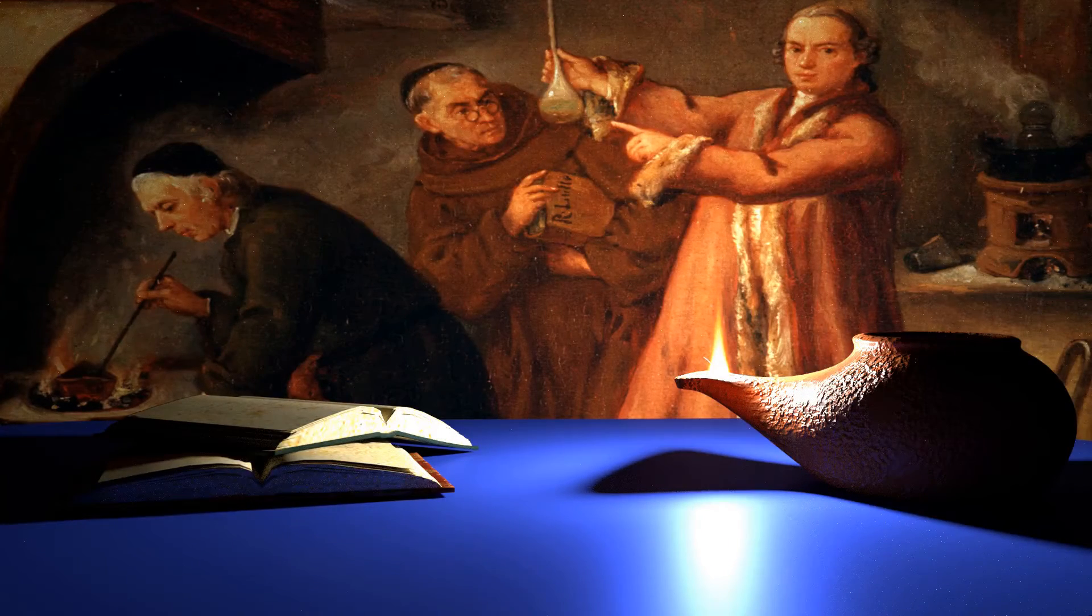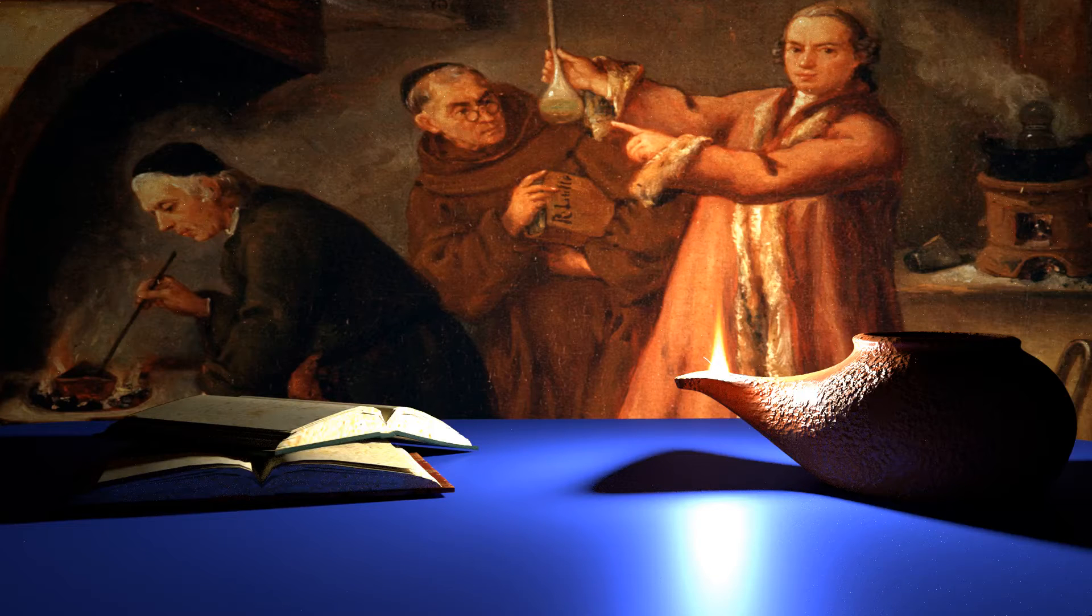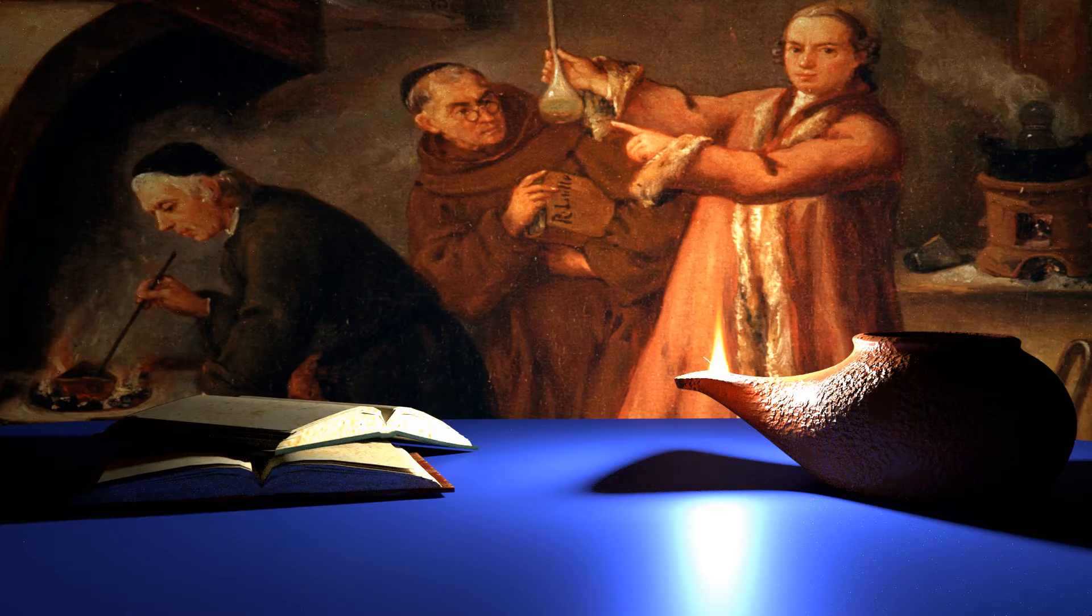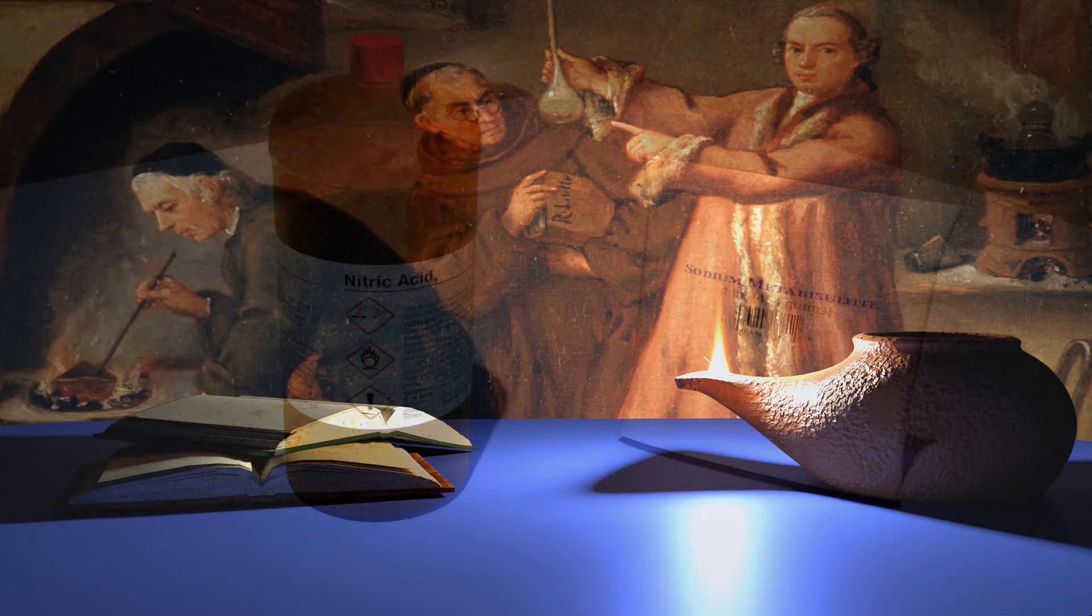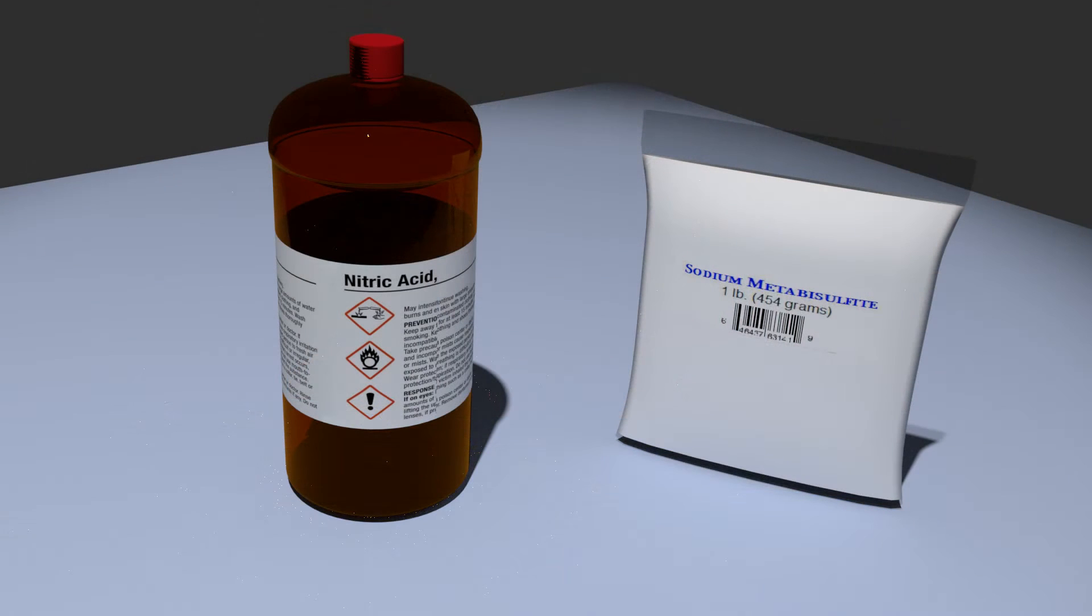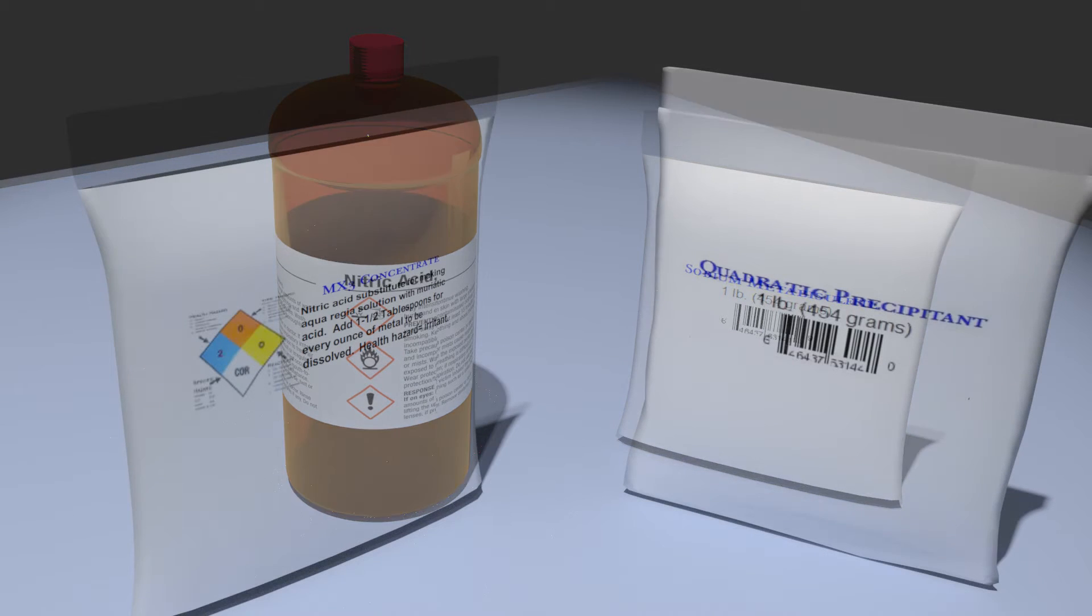The aqua regia process dates back over a thousand years and has traditionally used nitric and hydrochloric acids, as well as toxic and corrosive precipitants. Sure R&D has developed non-toxic, effective substitutes for both nitric acid and the precipitant.